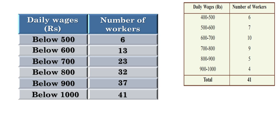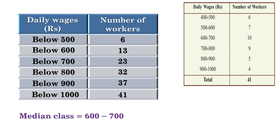We have seen that the wage of the 21st worker is the median. Below 600 there are 13 workers and below 700 there are 23 workers. That means the wages of workers from the 14th to the 23rd are below 700, so the median is below 700. But the 21st worker's wage is not below 600, as only 13 workers earn below 600 — so the median is not below 600. Therefore, the median is in the range 600 to 700. We call this the median class.